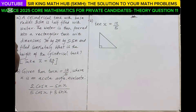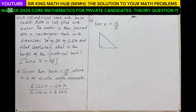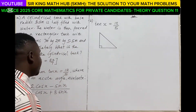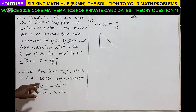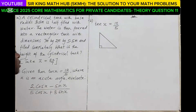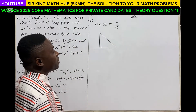For part B, given that tan x = 12/5, where x is an acute angle, we have to evaluate the expression: (2cos x − sin x) / (5cos x + 3sin x). To do this, we need expressions for cos x and sin x, using the tan identity from SOHCAHTOA.